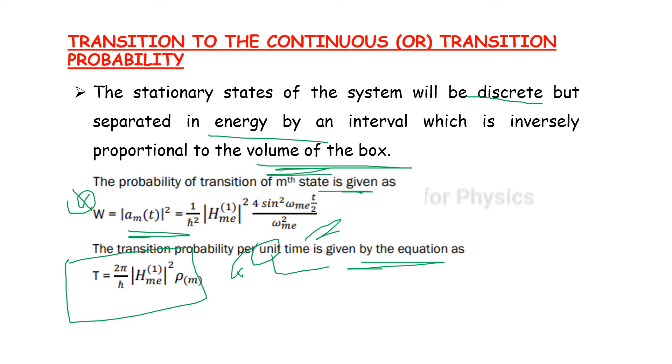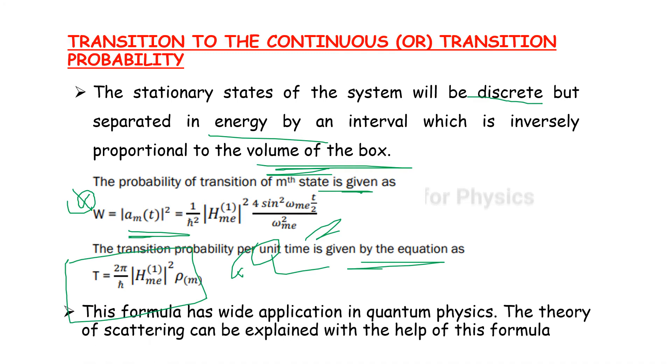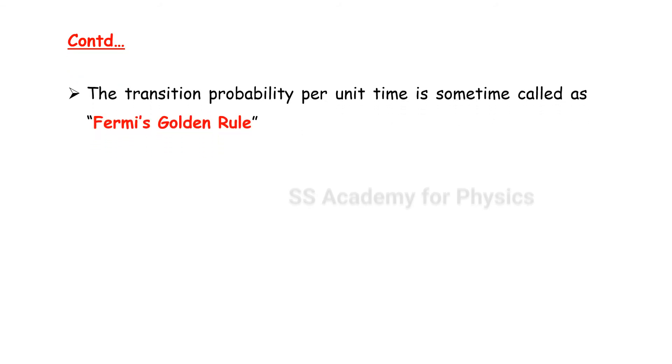The theory of scattering can be explained with the help of this formula. So the transition probability per unit time is sometimes called the Fermi-Golden rule.